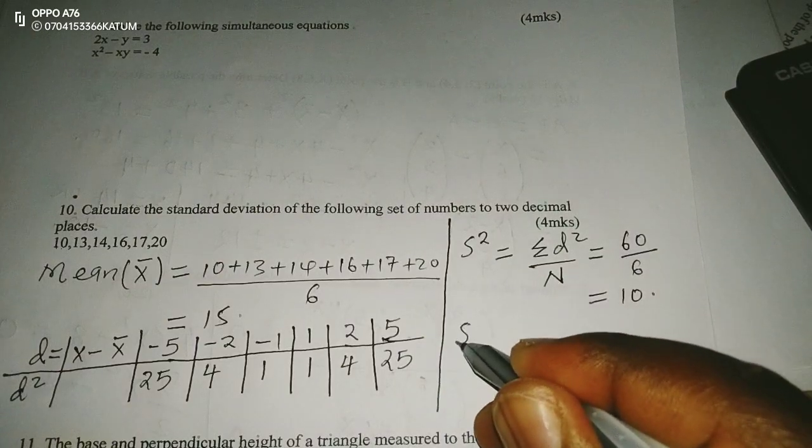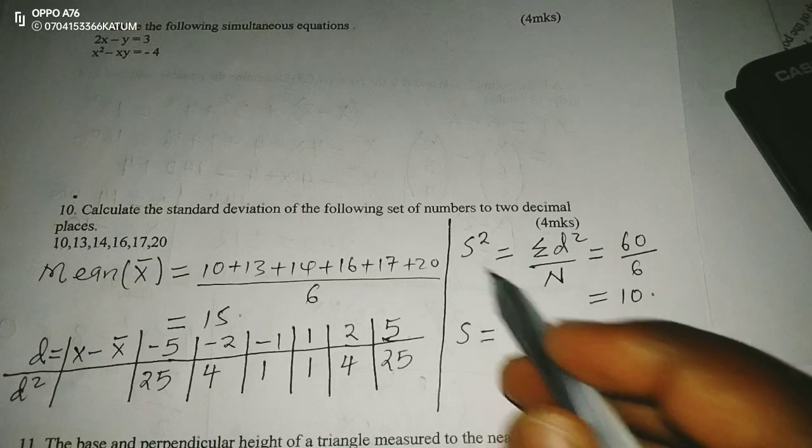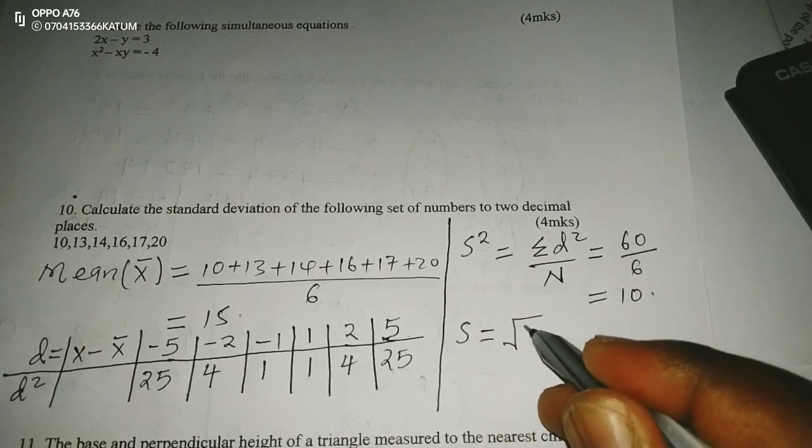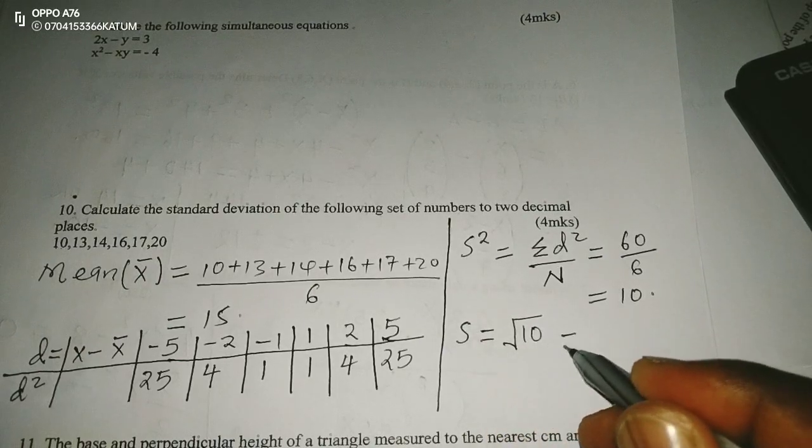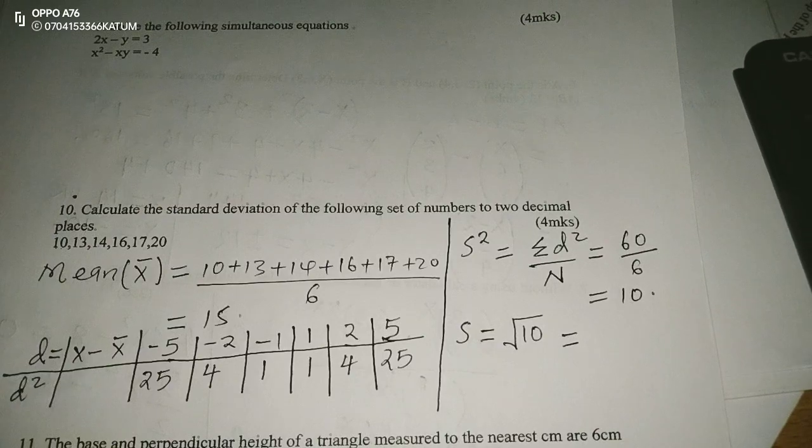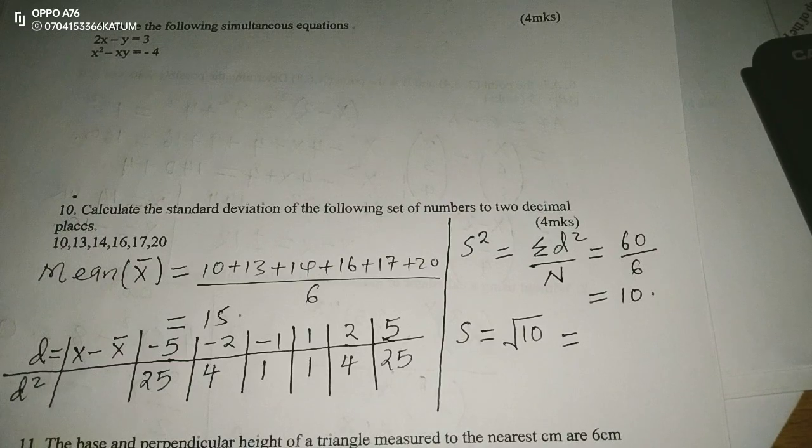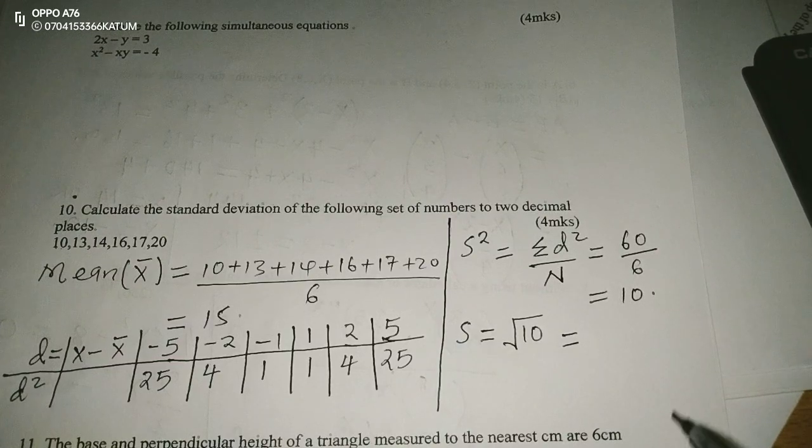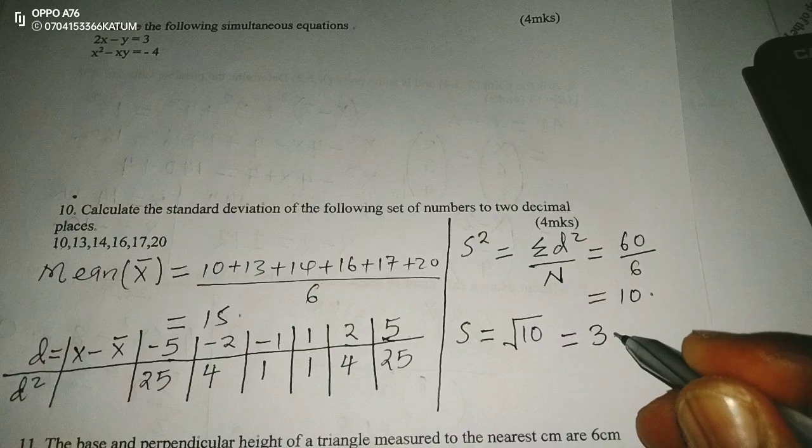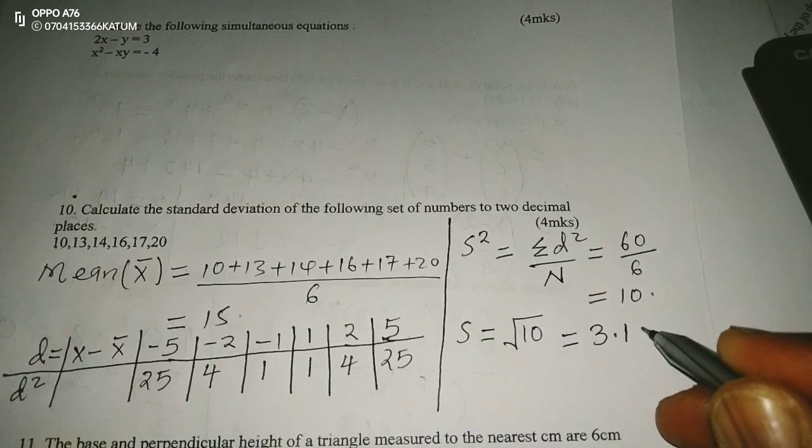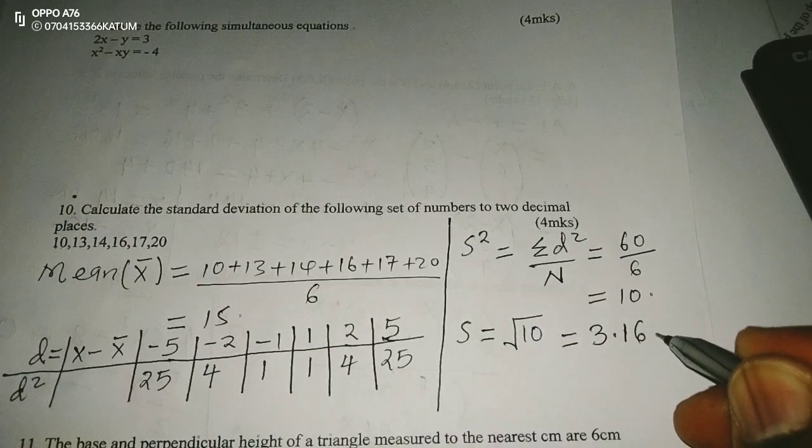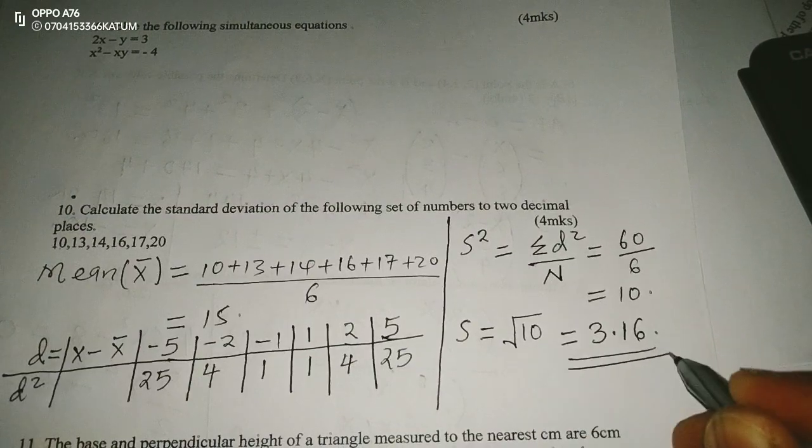But now for me to get standard deviation S, I will need the square root of variance, which will be the square root of 10. Then square root of 10 is going to be exactly 3.16. Remember, I'm supposed to give this one to 2 decimal places. So it is already done.